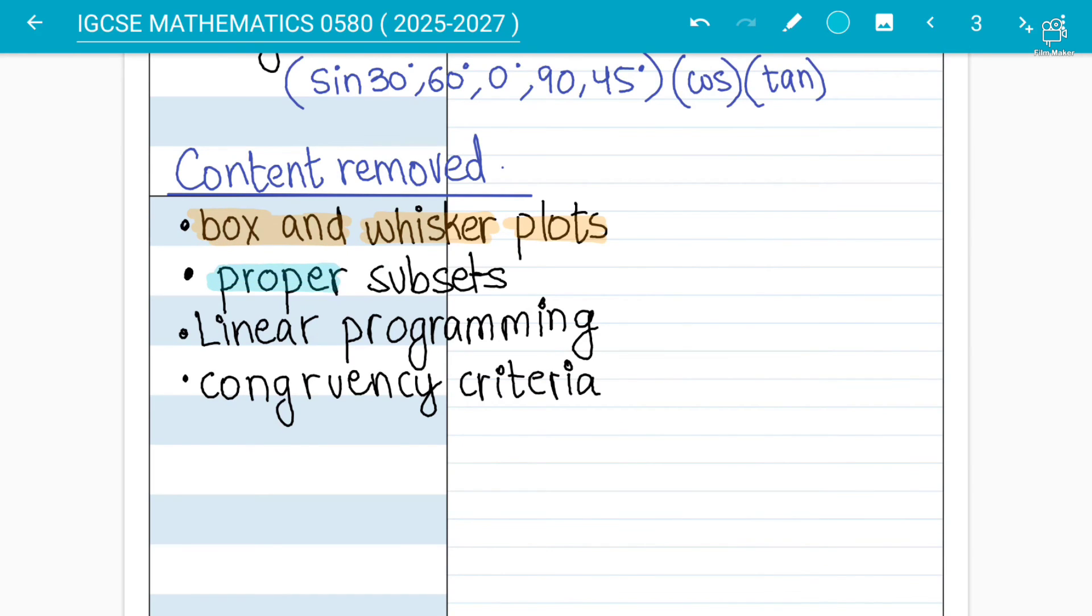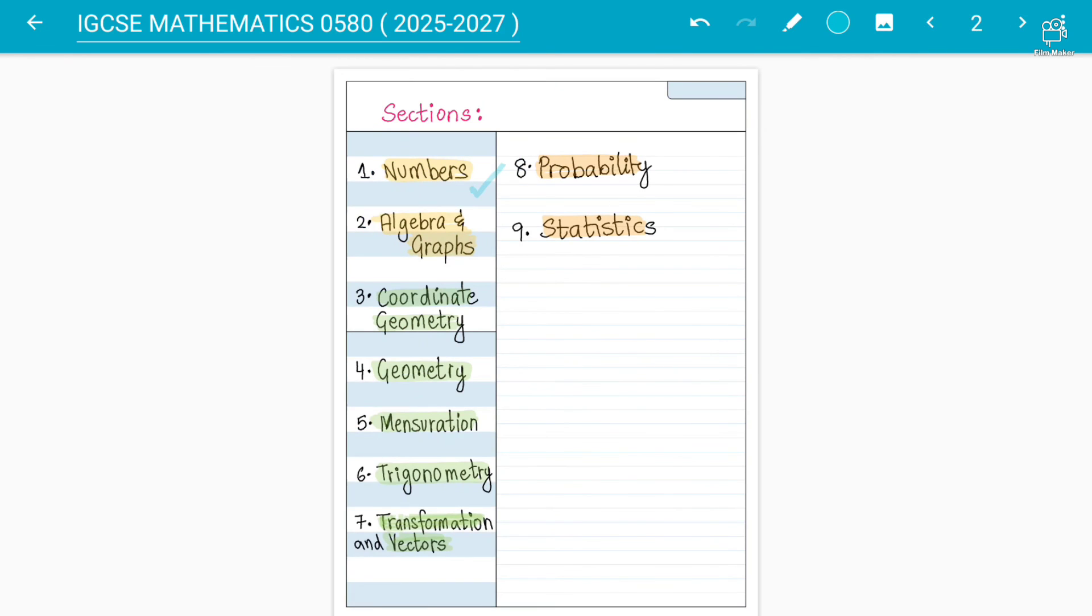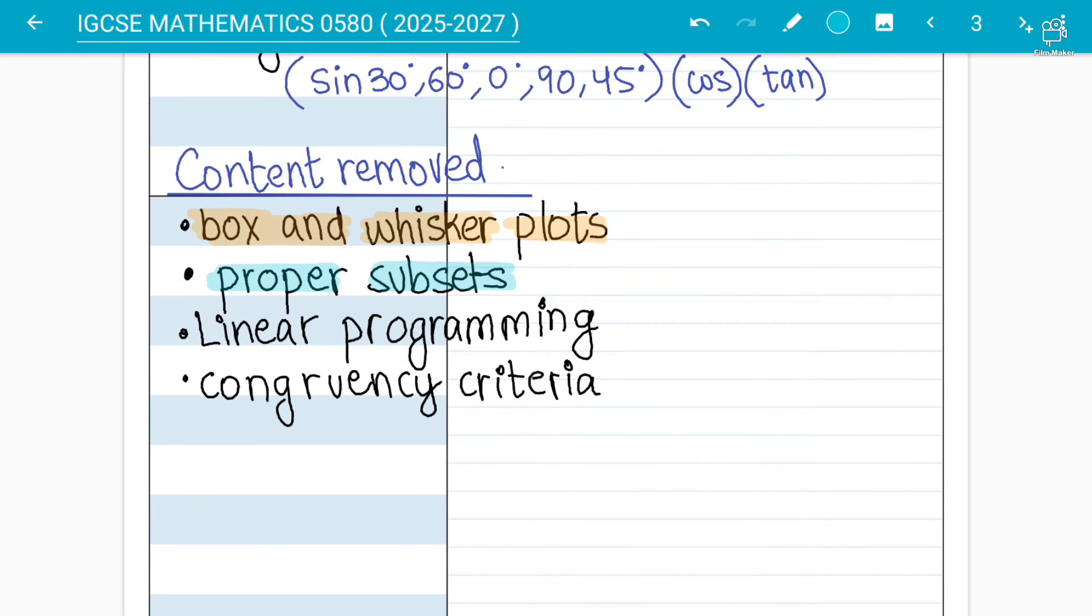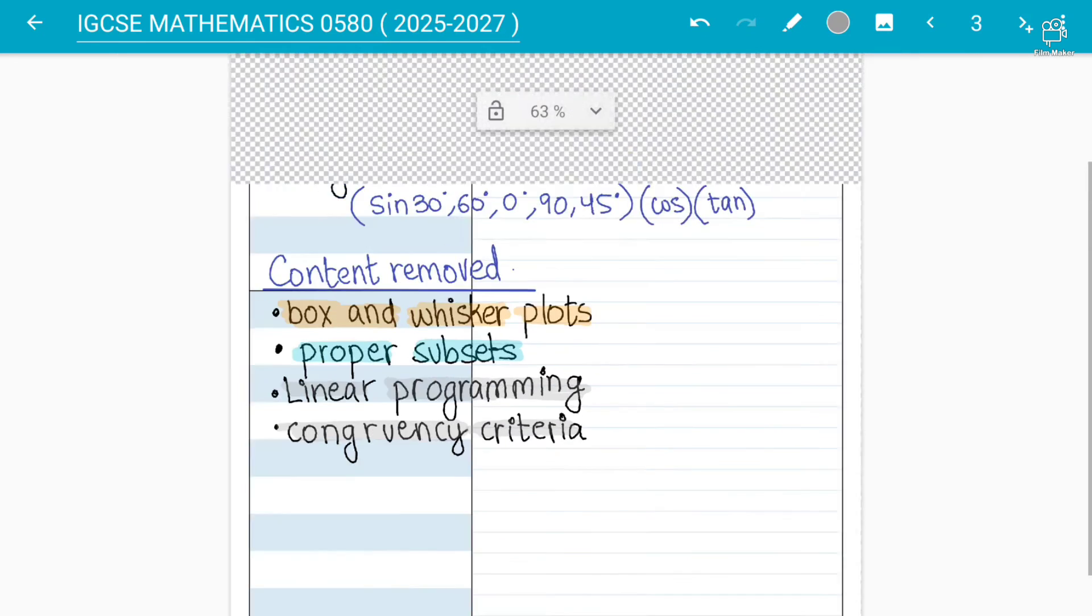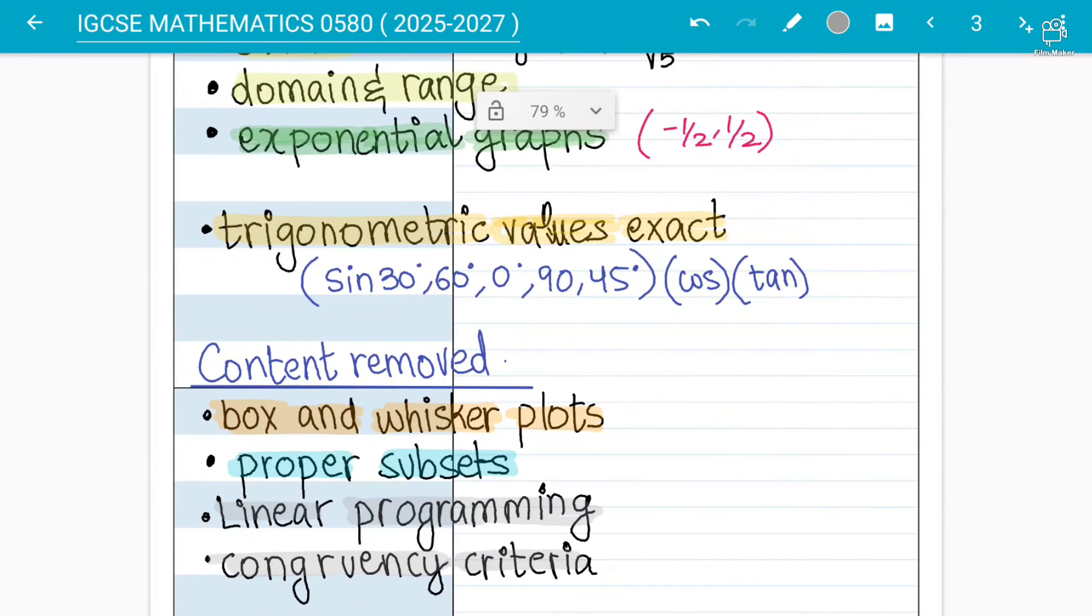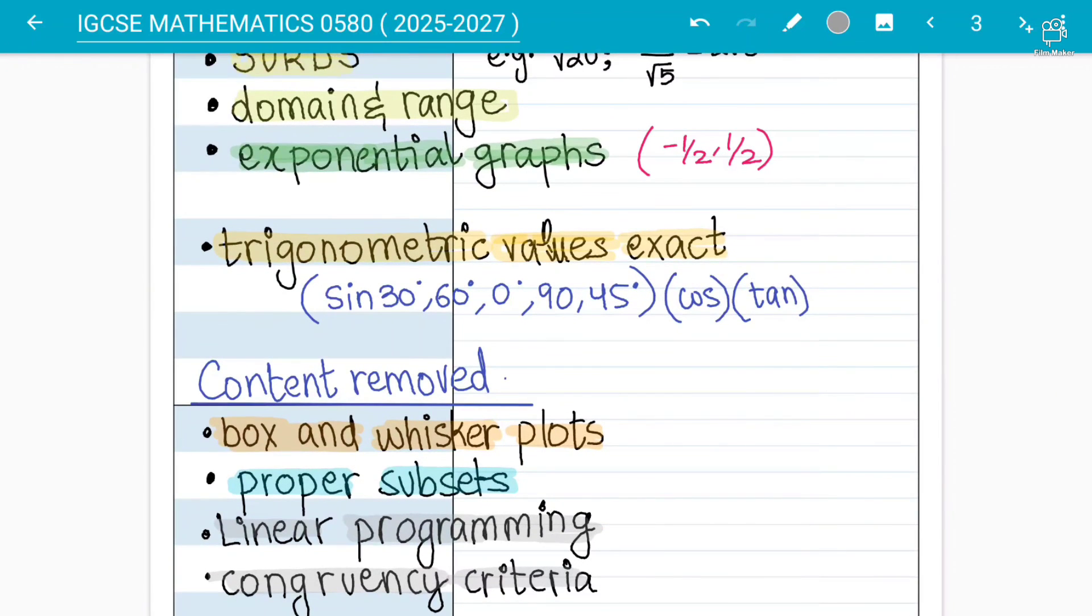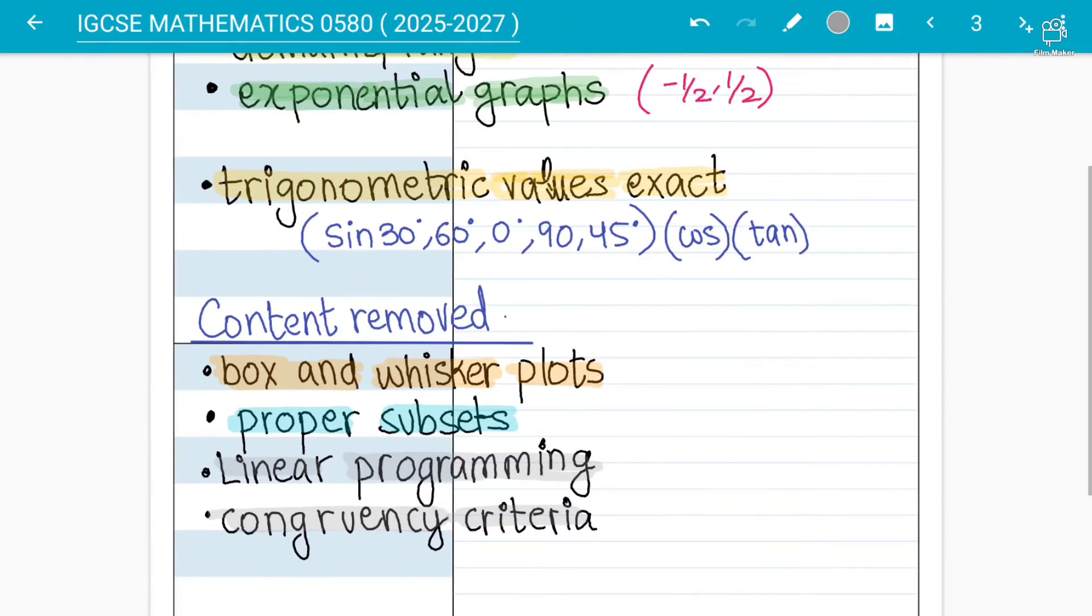Then they have removed, you will not be tested on proper subsets. Subsets will not come with the sets and Venn diagram chapter in the numbers section. Then you have linear programming as well, so linear programming is also removed as well. And you must know about the congruency criteria - congruency criteria is removed, but you still have the basic knowledge of congruency. Congruency is all about three sides are same, three angles will be same, but the congruency proving will not be tested.